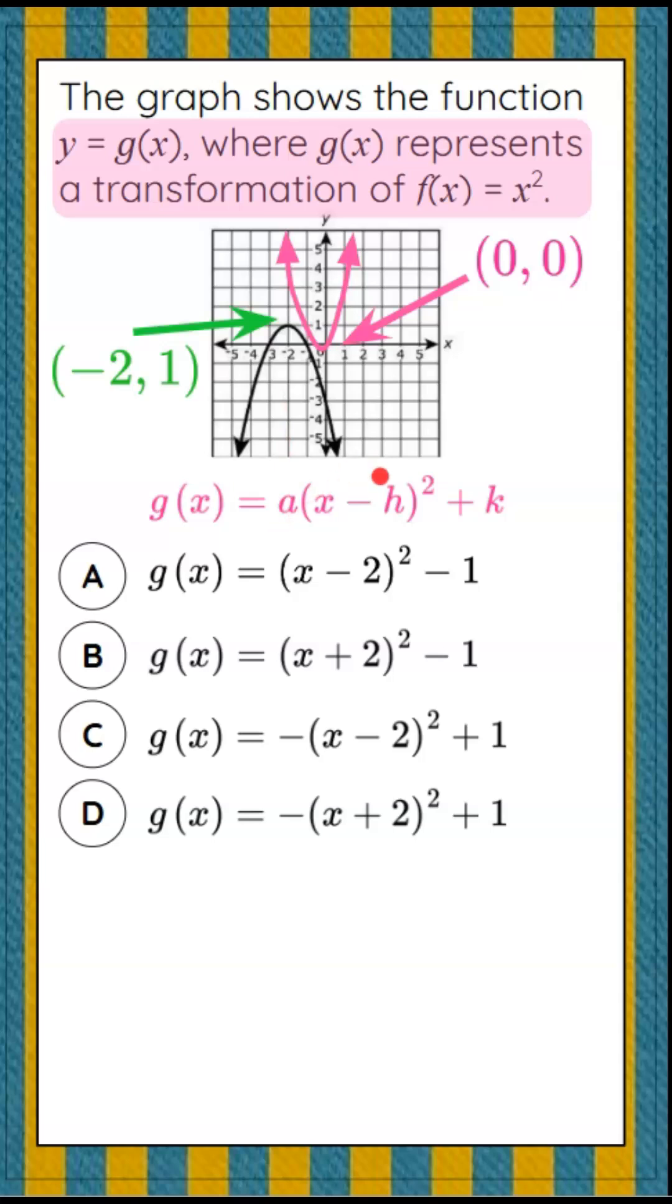When I look at the choices, I can see that right here our 'a' values are 1, 1, -1, and -1.